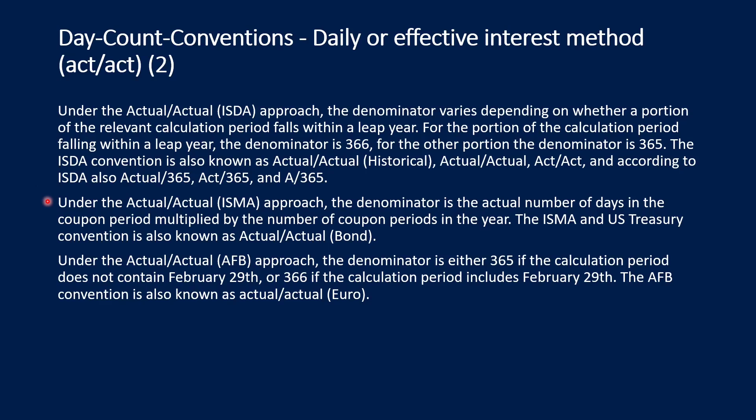Under the Actual/Actual ISMA approach, the denominator is the actual number of days in the coupon period multiplied by the number of coupon periods in the year. The ISMA and US Treasury convention is also known as Actual/Actual bond. Under the Actual/Actual AFB approach, the denominator is either 365 — if the calculation period does not contain February 29th — or 366, if the calculation period includes February 29th. The AFB convention is also known as Actual/Actual Euro.